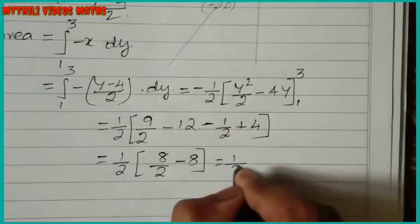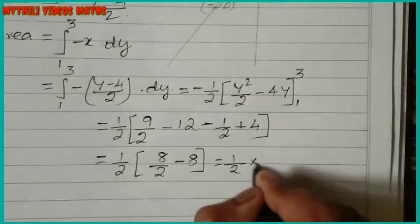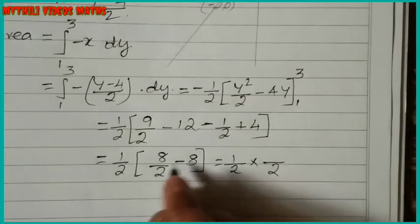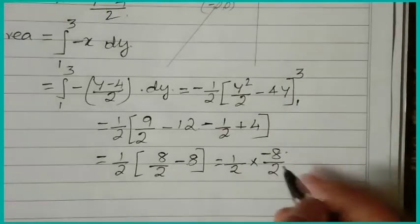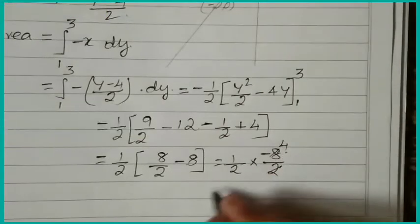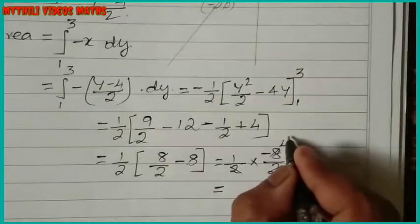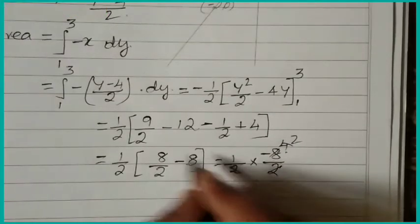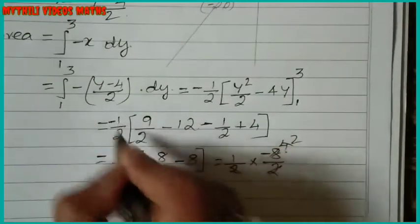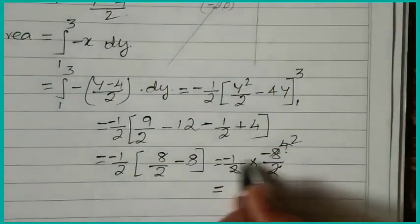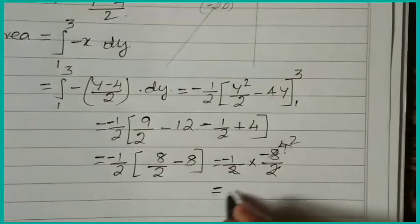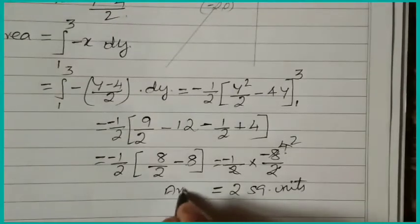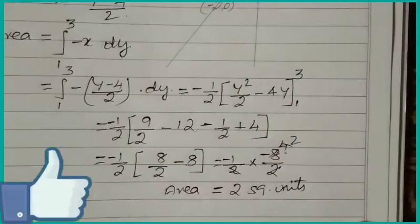Taking LCM and simplifying: minus one-half times [8 by 2 minus 8]. The minus signs cancel and we simplify to get the final answer. The area equals 2 square units. So the area of the bounded region is 2 square units.